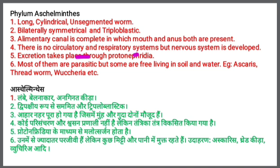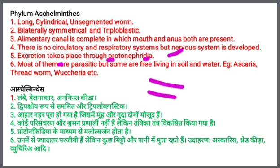The fourth point is there is no circulatory and respiratory system, but the nervous system is developed. Respiration, if it occurs, takes place through diffusion. The fifth point is that excretion takes place through protonephridia, which is a tubular-like structure made up of dead cells through which waste material is expelled from Aeschelminthes.